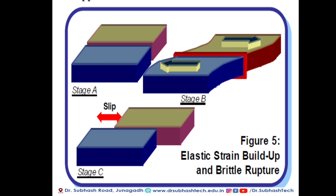After state C occurs, if a building is located near the fault line, it will experience a very severe defect on the building and may be destroyed.